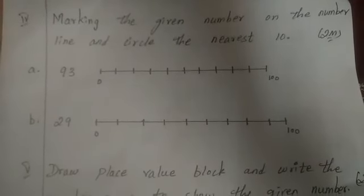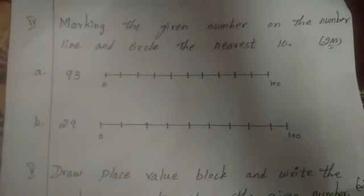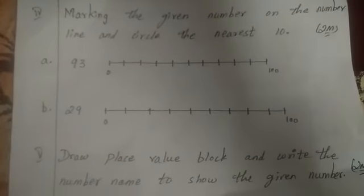In the middle you have to write 10, 20, 30, 40, 50, 60, 70, 80, 90, children. Which is the nearest to 93? You have to round up there. Next, same way we also have to do children, 29.